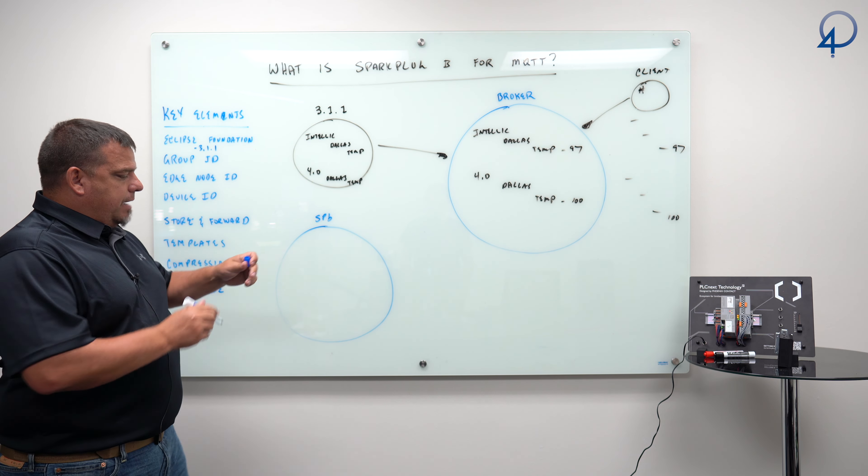That is your vanilla MQTT. The beauty of MQTT 3.1.1 is that I can create a topic namespace, essentially piece together a unified namespace, and publish values from sensors to basically anywhere in that namespace.